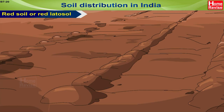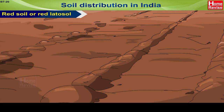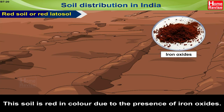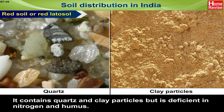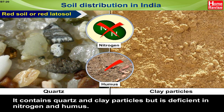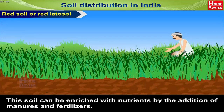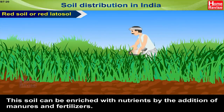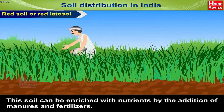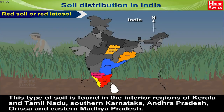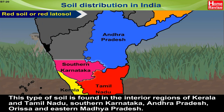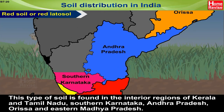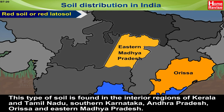Soil distribution in India. Red Soil (or red latosol): This soil is red in colour due to the presence of iron oxides. It contains quartz and clay particles but is deficient in nitrogen and humus. This soil can be enriched with nutrients by the addition of manures and fertilisers. It is found in the interior regions of Kerala, Tamil Nadu, southern Karnataka, Andhra Pradesh, Orissa, and eastern Madhya Pradesh.